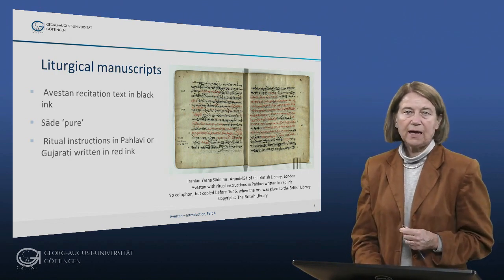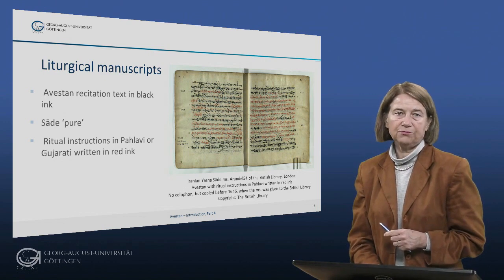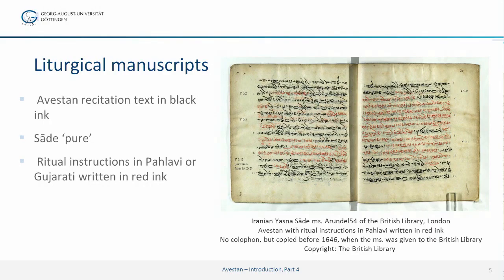The liturgical manuscripts have the Avestan text only and are therefore called Sade, or 'pure', which is Pahlavi Persian. They provide the text to be recited in the rituals. The instructions in Pahlavi or Gujarati state which priest has to recite a particular text and describe the actions to be performed during the recitation. The ritual instructions are often written in red ink, which makes them stand out more. Here in this example you have the ritual instructions written in red ink while the Avestan recitation text is written in black ink, and the ritual instructions here are in Pahlavi.